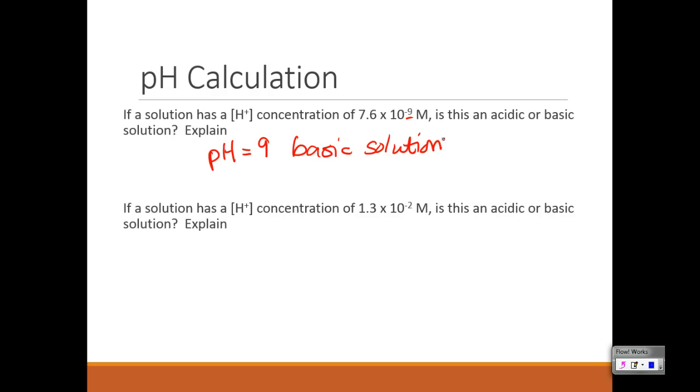Perfect. Let's look at the next one. Pretty easy as well. We have a concentration of 1.3 times 10 to the negative 2nd. So our pH is just going to be 2. And so when we asked you to explain, this is going to be a larger, because remember, negative 2 is bigger than negative 9. This is a smaller number. This is a larger number. So since this is a larger number of hydrogen ions, this is going to be an acidic solution or an acid. And so it's really just understanding how big or small this number is. And that's increasing or decreasing the amount of hydrogen ions in it. More hydrogen ions is going to be acidic. Less hydrogen ions is going to be basic. Exactly.